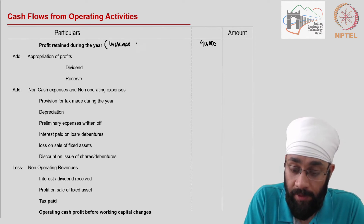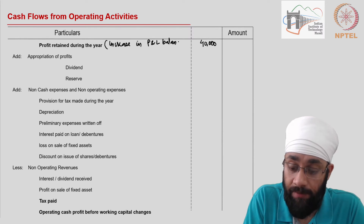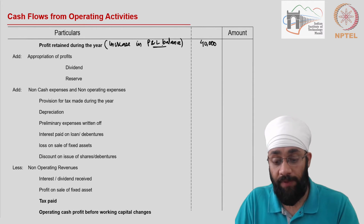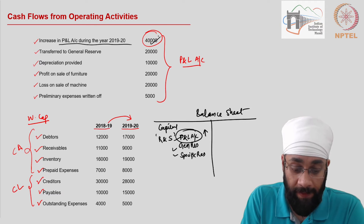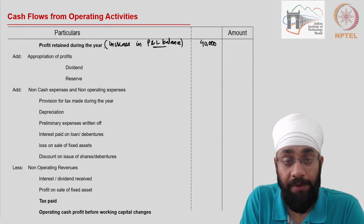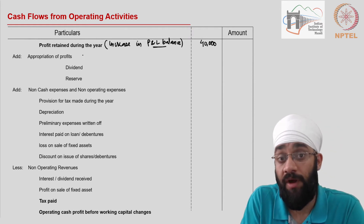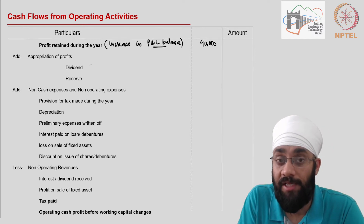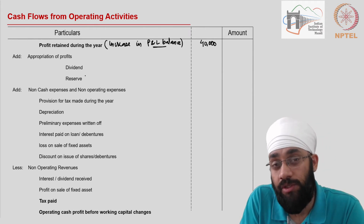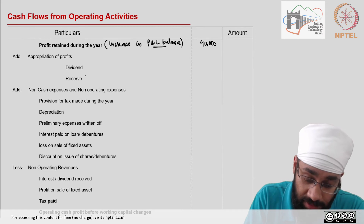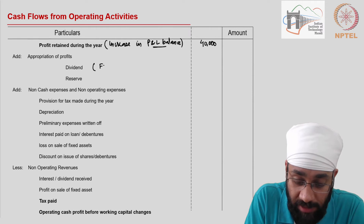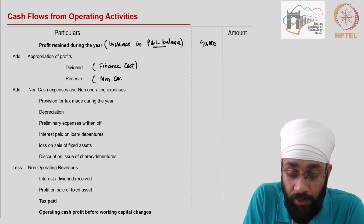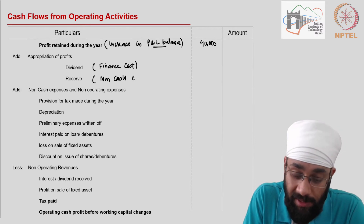The profit and loss balance is not referring to profit after tax only — this is after you do the appropriations as well. Then we add back the appropriation of profit. Why? Because dividends paid are not an operating item; they are a financing expense. And the transfer to reserve is not a cash expense — it is a non-cash transaction. So dividends are a financing activity, and reserves are a non-cash item.